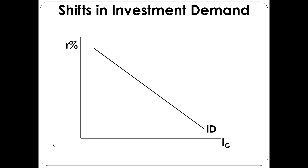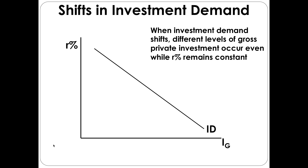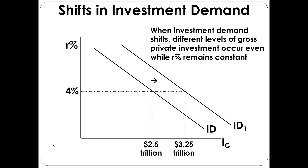You can also have a shift in the investment demand curve. When the investment demand curve shifts, you have a different level of gross private investment even though the real interest rate remains constant. For example, at a 4% real interest rate you might have $2.5 trillion in gross private investment. If the curve shifts to the right to ID1, then at that same 4% real interest rate you now have $3.25 trillion in gross private investment after the shift.